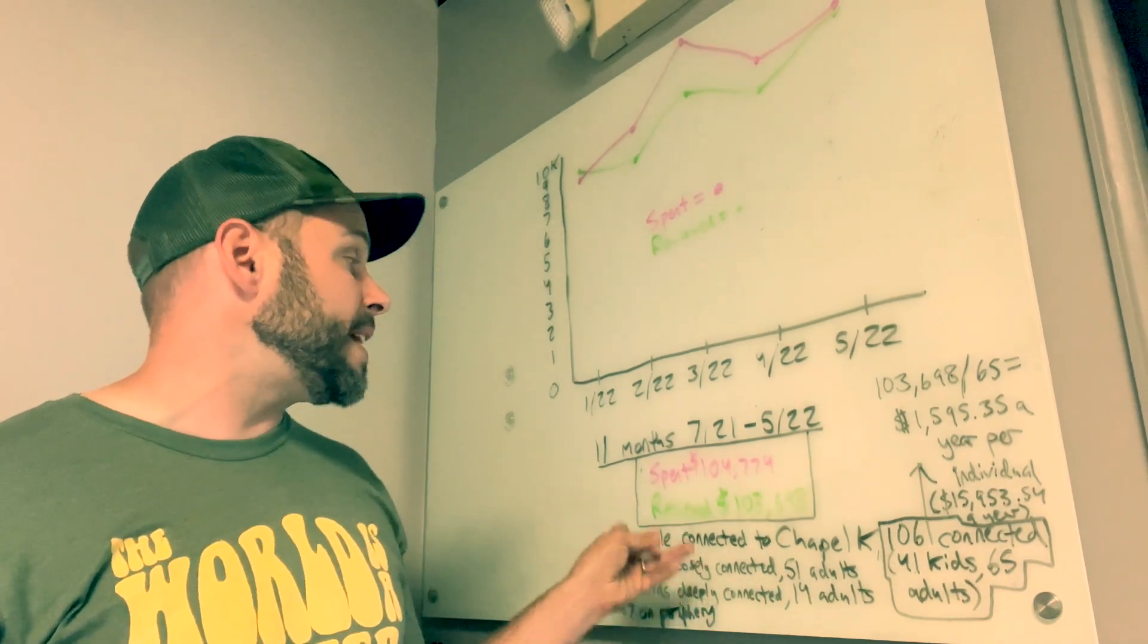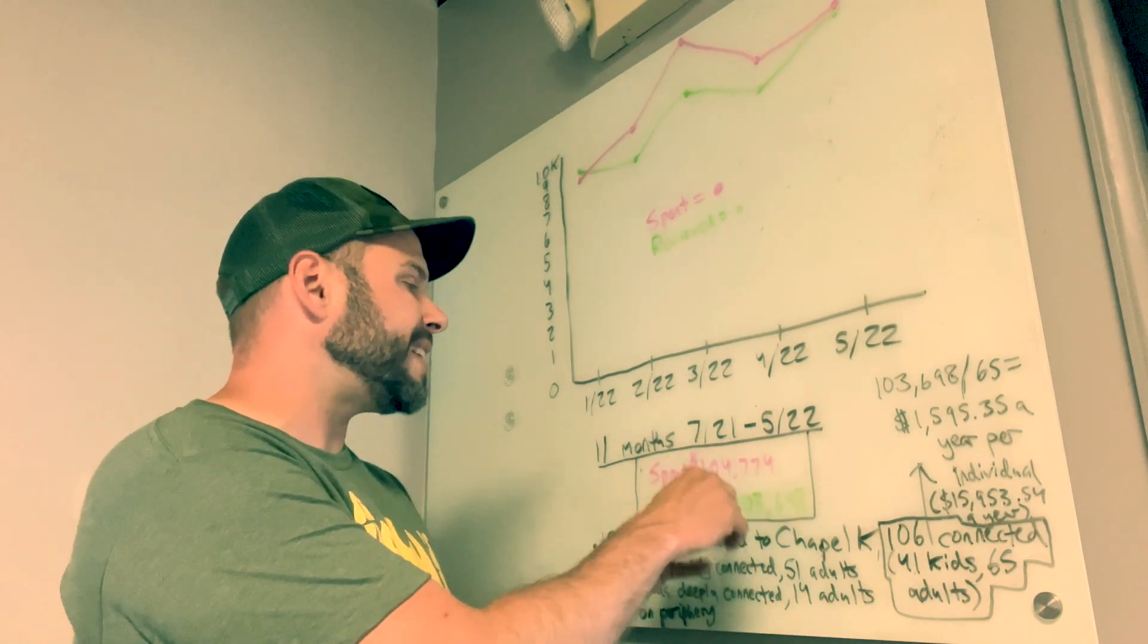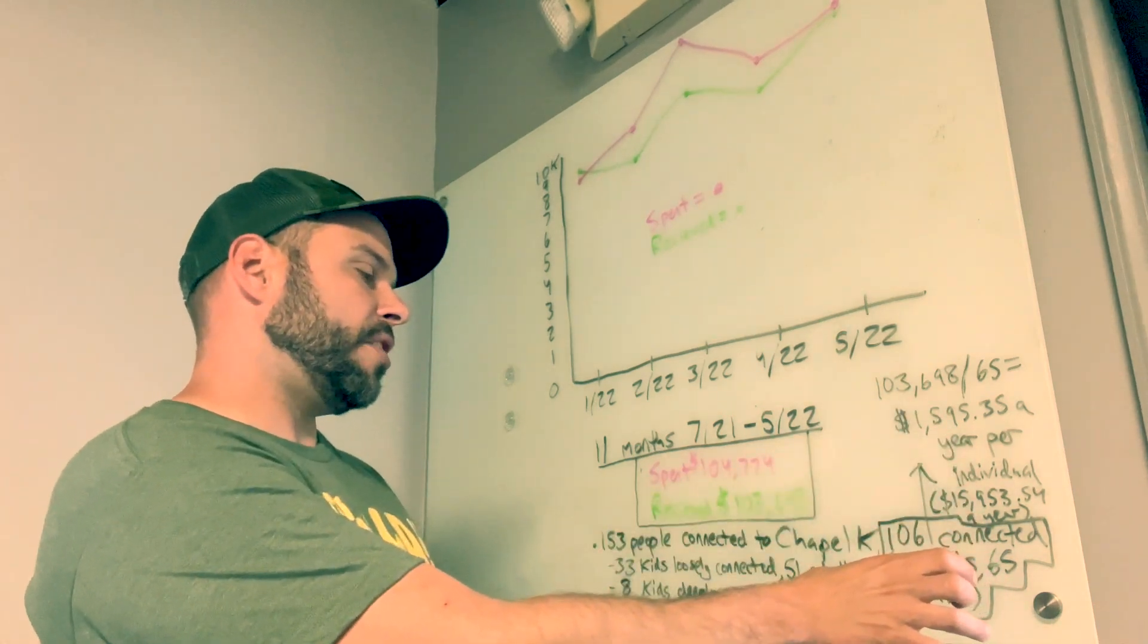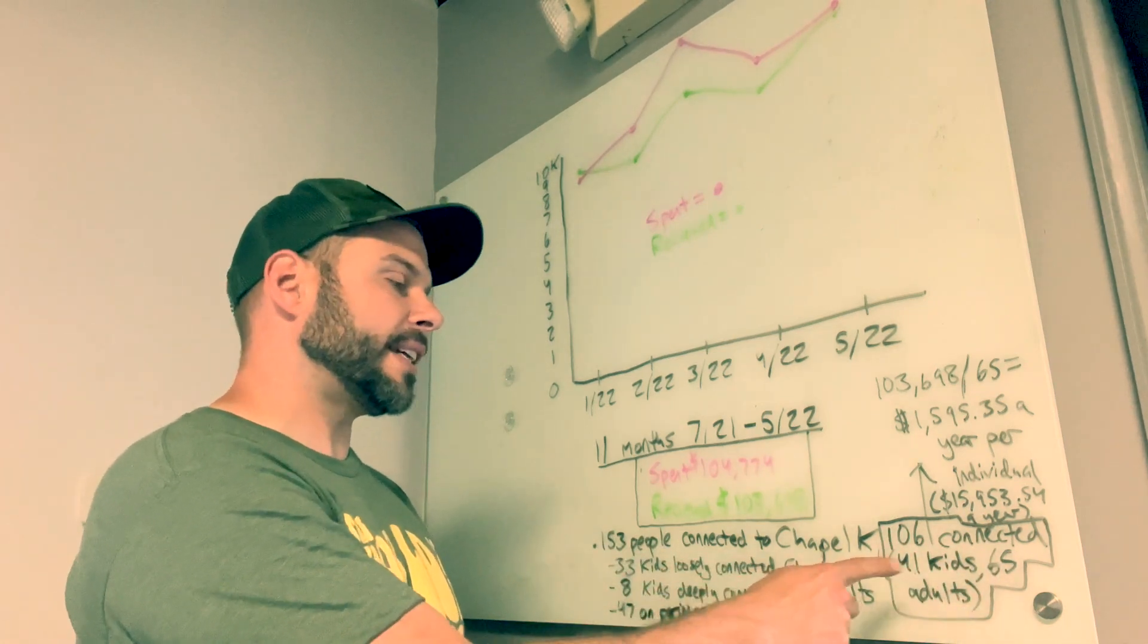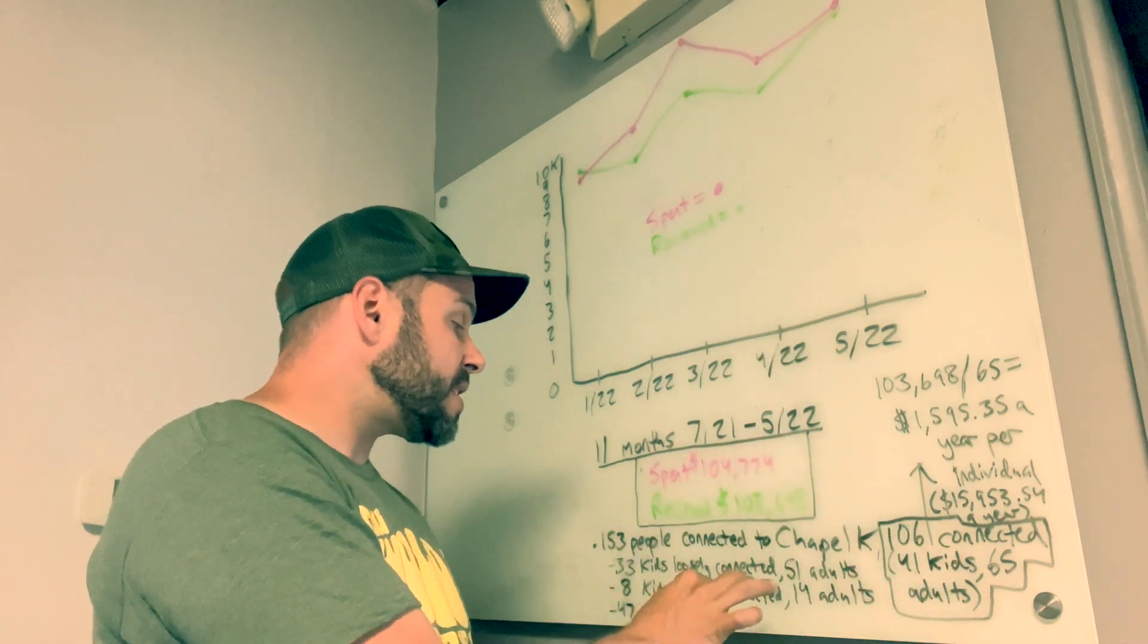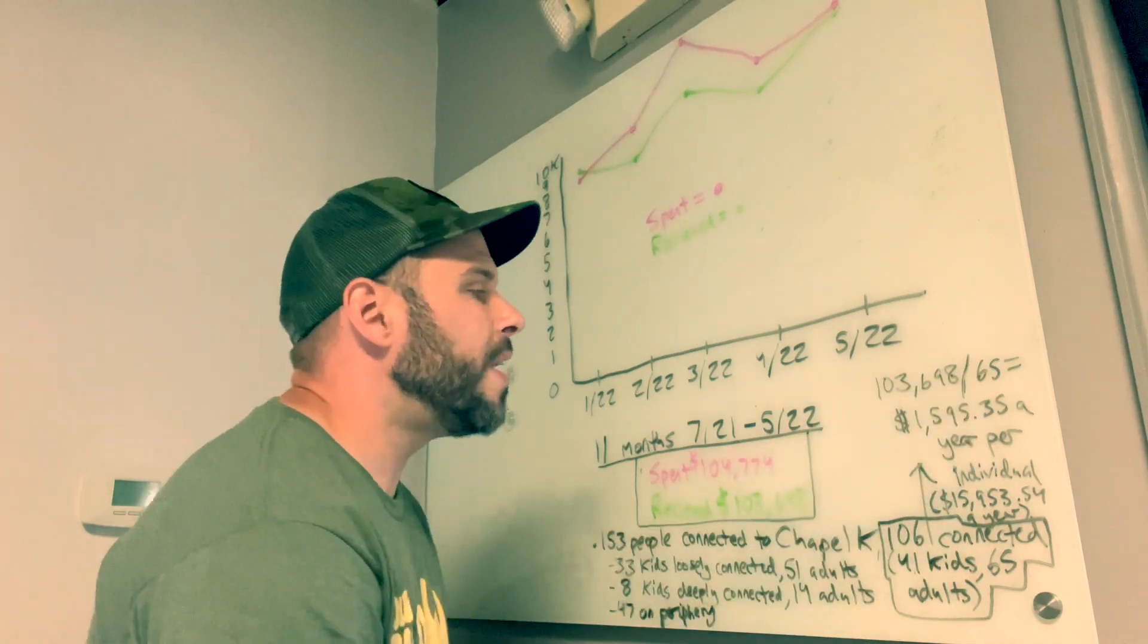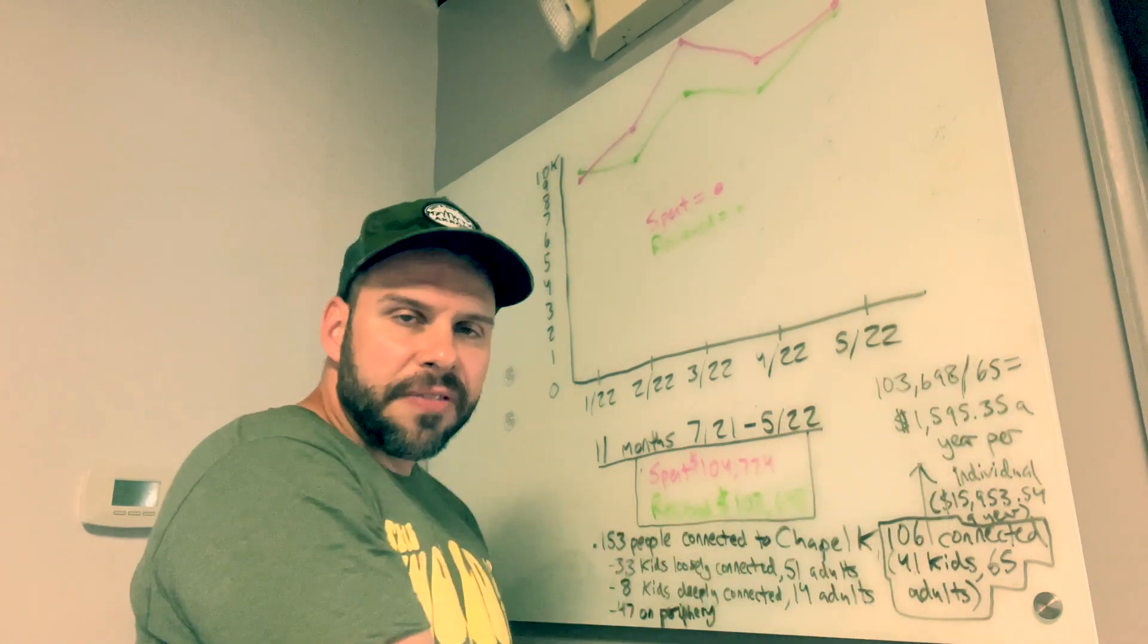When you connect all of this information to the giving information, you see that we received $103,698 in the past 11 months. We have 106 people that are connected to our church that are either loosely or deeply connected. That's 41 kids, 65 adults. If you divide $103,698 by 65, you get the figure of $1,595.35 a year per individual that people give. Now this includes family units. Some people in that 65 may not work.